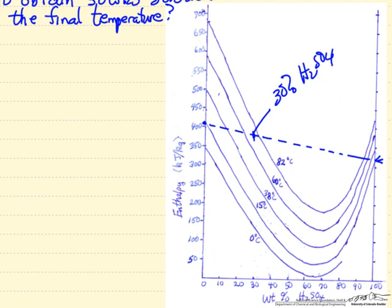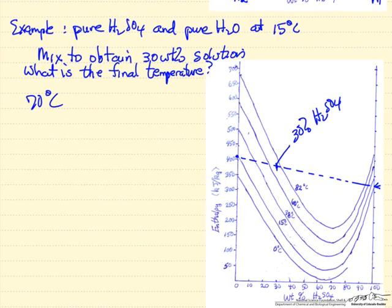We could just read the temperature off this diagram that it's somewhere between 60 and 82. We have to make an approximation, it's about 70 degrees C. That's the adiabatic temperature when we mix pure material starting at 15 degrees C.